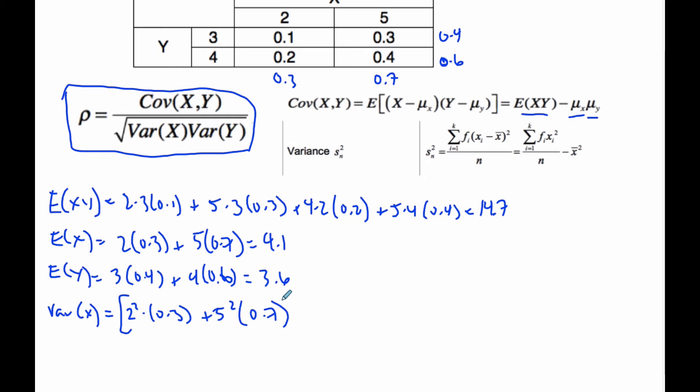This is going to be subtracted from the expectation squared, 4.1 squared. When I do that, I end up with a value of 1.89.